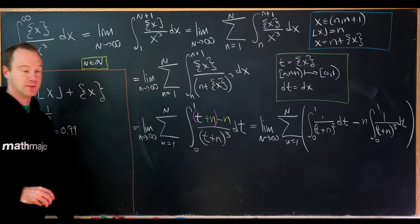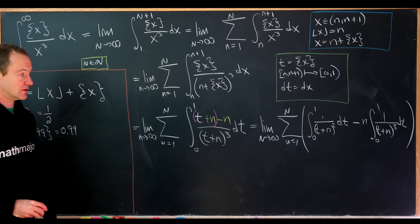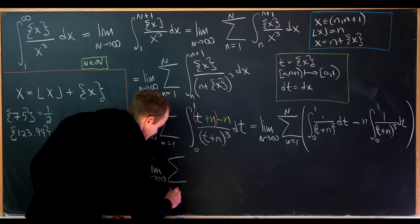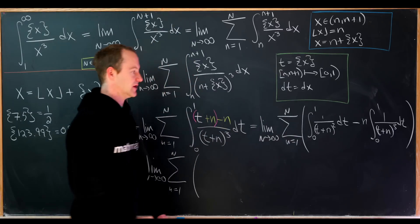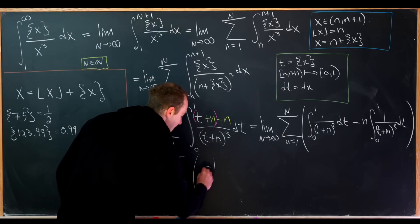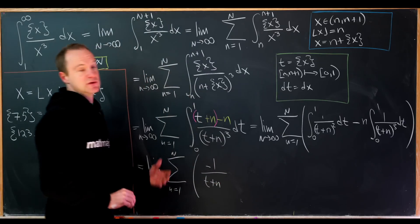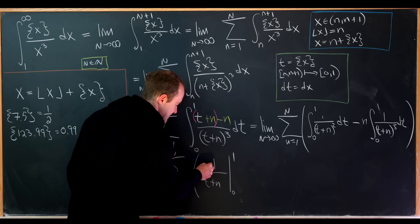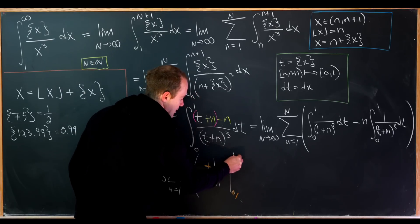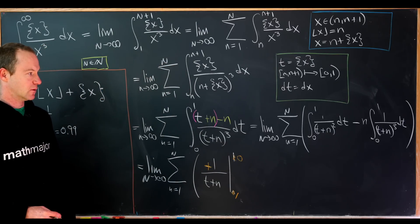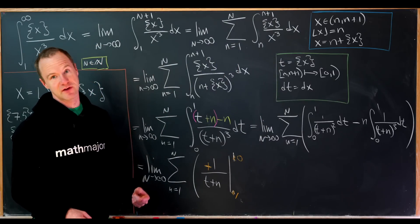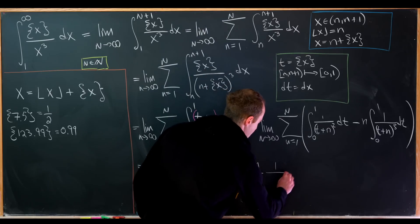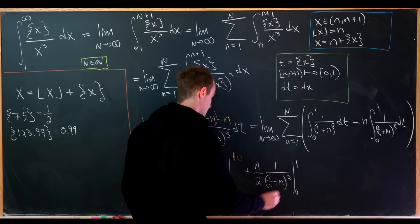Now let's compute those antiderivatives. For the first piece, we get −1/(T+n) evaluated from 0 to 1, but using a sign-flip trick we reverse the order of evaluation to go from 1 to 0 instead. For the second piece, the exponent −3 increases to −2, and dividing by the new exponent cancels the minus sign out front, giving plus n/2 times 1/(T+n) squared evaluated from 0 to 1.